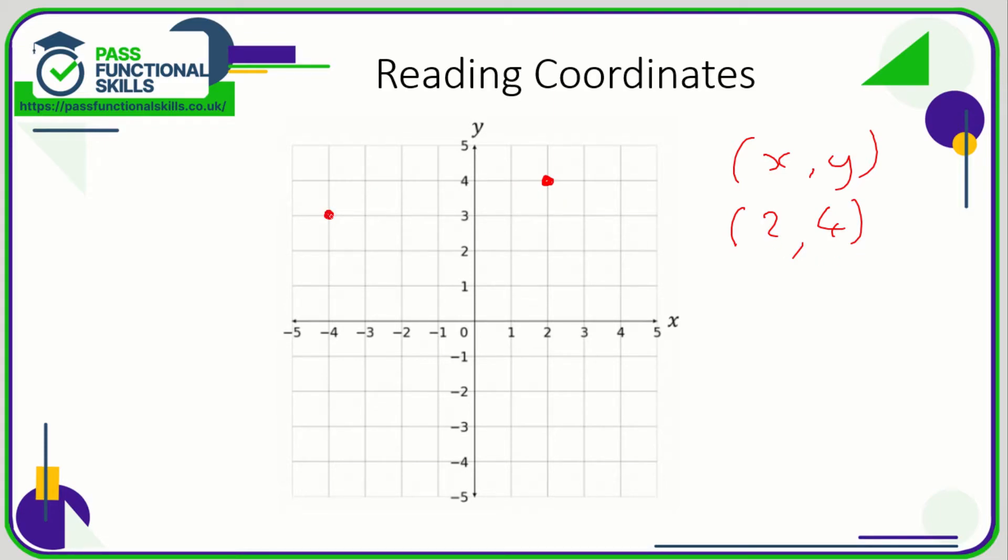Let's take a look at another point here. So again, we're going to take the x reading first, so the horizontal first. So that is -4 horizontally, and it's going up to 3.